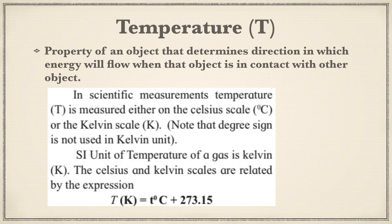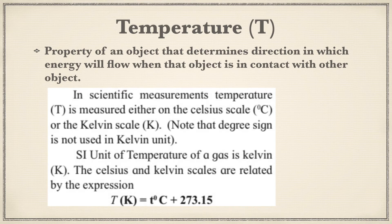The next measurable property is temperature, represented by capital T. It is the property of an object that determines the direction in which energy will flow when the object is in contact with another object. Temperature is measured on the degree Celsius or Kelvin scale — note there is no degree sign for Kelvin. The SI unit is Kelvin (K). The Celsius and Kelvin scales are related by: K = °C + 273.15.